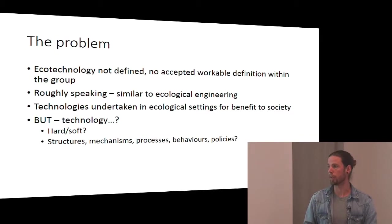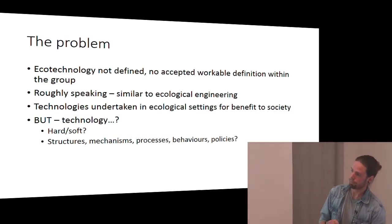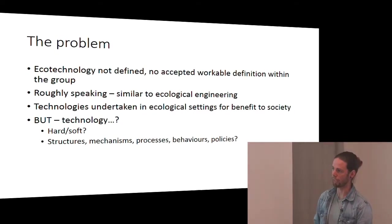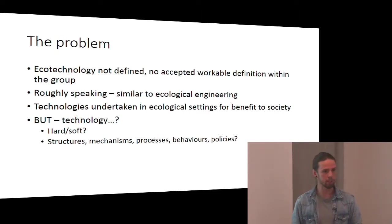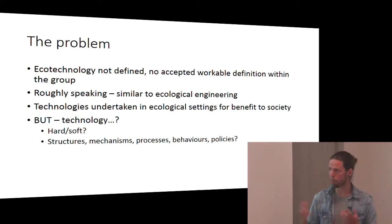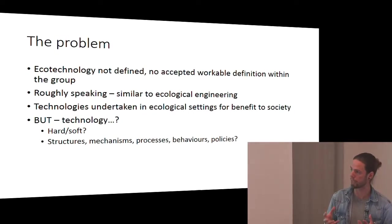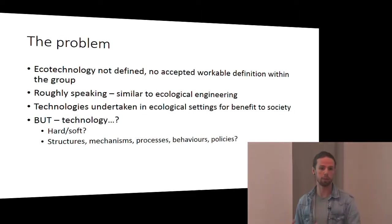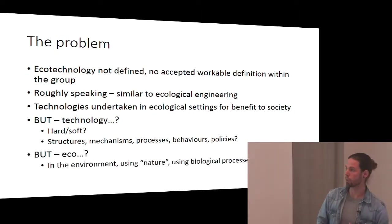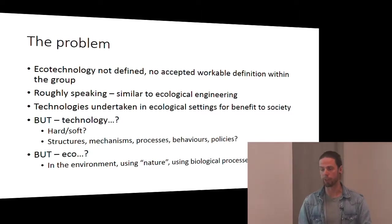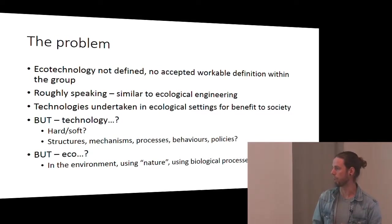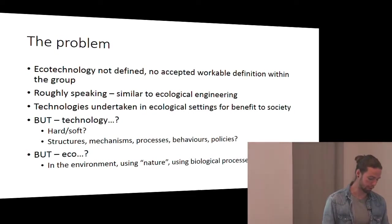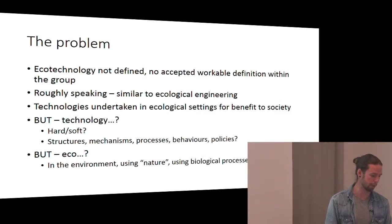What did we mean by technology? Are we talking about hard technology like machinery or nanotechnology, something artificial put into the environment? Or do we mean soft technology, which could be things like practices or behaviours? So what along this spectrum of structures, mechanisms, processes, behaviours, policies do we count as included? And then what do we mean by 'eco'? Do we mean in the environment, using nature, or making use of biological processes? These are things that weren't implicitly obvious to even the experts in our group.